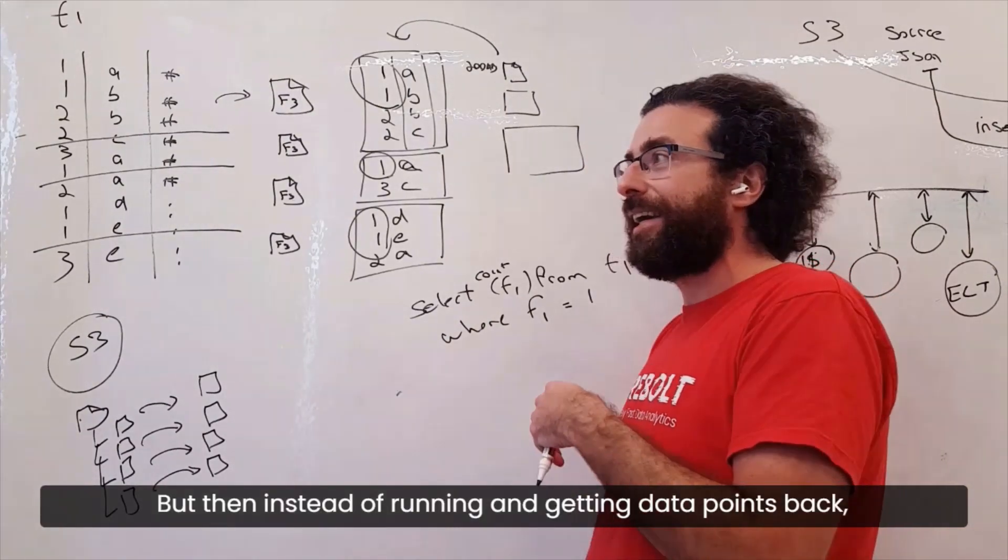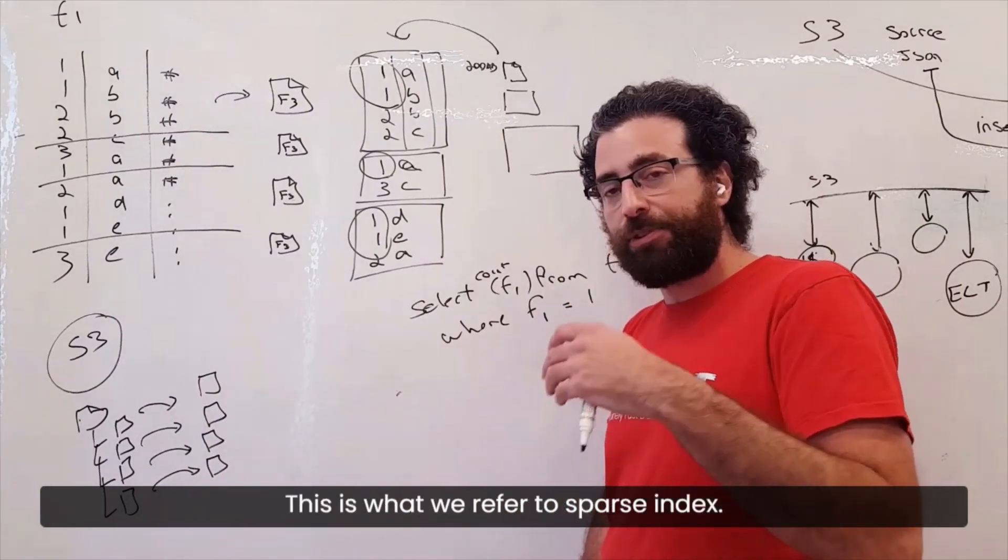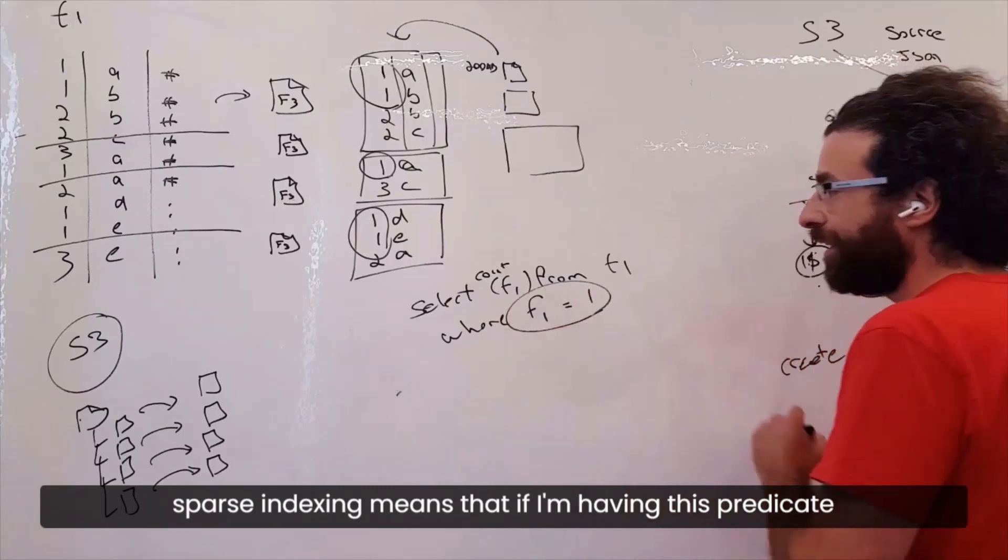But then, instead of running and getting data points back, we're getting ranges back. This is what we refer to as sparse indexing. Sparse indexing means that if I'm having this predicate,